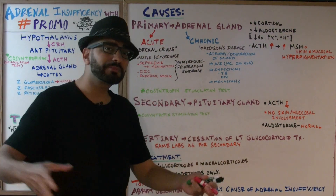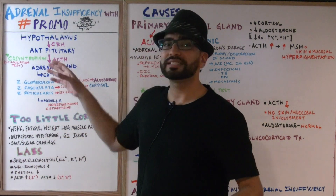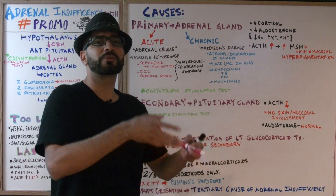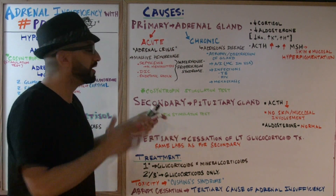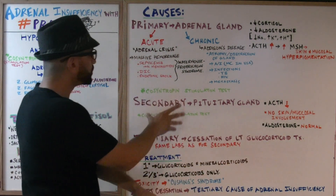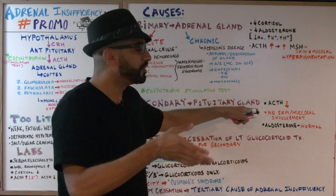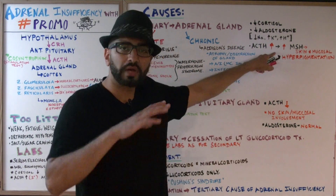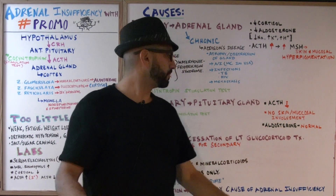In secondary adrenal insufficiency, the problem is at the level of the brain — the pituitary gland is not releasing ACTH, so the adrenal gland doesn't produce cortisol. If you give cosyntropin (the ACTH analog) to this patient, cortisol levels will rise, which helps distinguish secondary from primary causes. Since ACTH levels are low, MSH levels will also be low, so there will be no skin or mucosal hyperpigmentation.